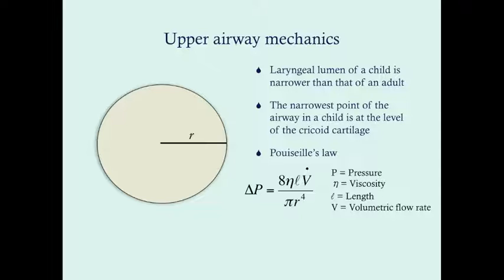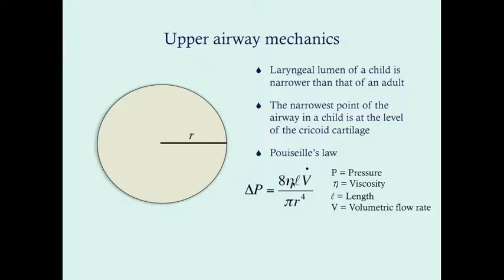When you think about pressure moving through a lumen — a differential in pressure — we have something called Poiseuille's law. Poiseuille's law states that the change in pressure equals eight times the viscosity times the length times the volumetric flow rate, all divided by pi r to the fourth. In other variations of the equation, you may see the volumetric flow rate substituted with Q, which just means flow. Here in airway mechanics we use V because Q, in physiologic notation, is cardiac output.